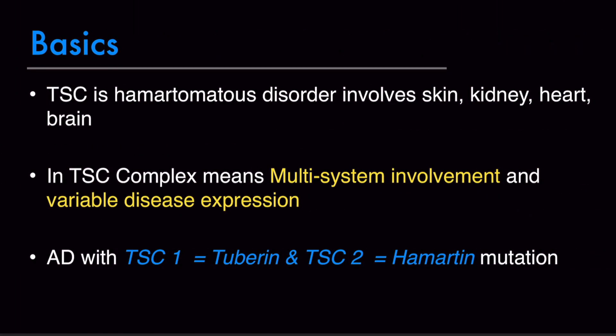Tuberous sclerosis is a hamartomatous disorder, meaning it has hamartomas in the skin and other organs. A hamartoma is basically a benign mass of tissue which is present in its original tissue but has abnormal architecture — it arises from its native tissue but the architecture is abnormal. This disorder is called tuberous sclerosis complex or TSC because there is multi-system involvement, complex because there is multi-system involvement and variable manifestation of the disease. It is an autosomal dominant disorder, and the two gene mutations responsible for it are TSC1 and TSC2.